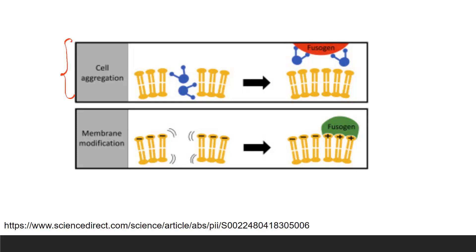In the aggregation mechanism, cells suspended in an aqueous medium are separated by water molecules. The fusogens attract these water molecules to themselves, which reduces the space between the cells or protoplasts and causes their aggregation.